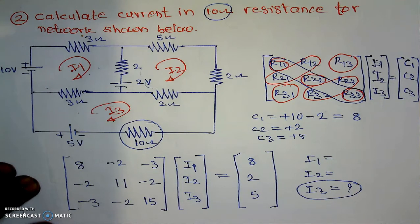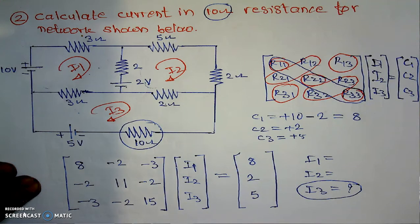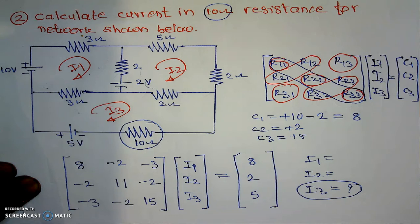This method is very efficient when using the direct inspection method — no need to look at the directions of the currents, whether upward or downward. Directly, this method will give the sign of the current as well. That is why I prefer this method whenever the number of sources is more in a superposition theorem, or if the network is complicated. That's all for this direct inspection method. Thank you.